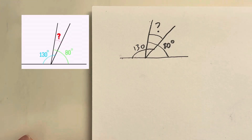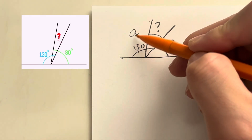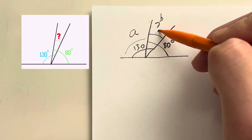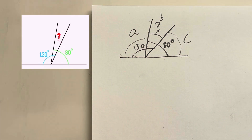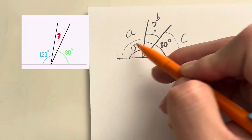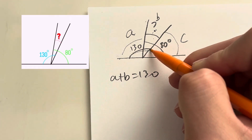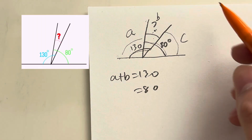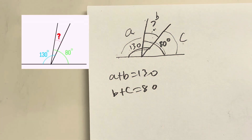Let's try out this geometry question. To solve this, I'm going to label each section: angle A, angle B — the angle we're trying to find — and angle C. Using that, I can create a system of equations. Angle A plus angle B has to sum to 130, because those two angles add up to that outer angle. And angle B plus angle C sums to 80.